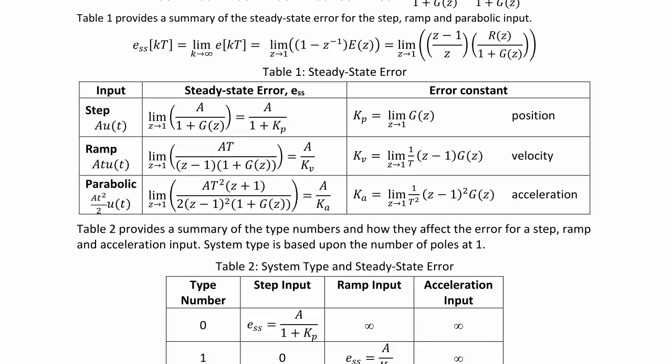Using the final value theorem in order to find the steady state error, we get E_ss(KT) equals the limit as K goes to infinity of E(KT), or the limit as Z goes to 1 of (1 minus Z⁻¹)E(Z), or the limit as Z goes to 1 of (Z minus 1)/Z times R(Z) over 1 plus G(Z).